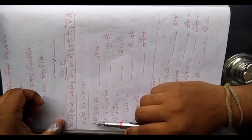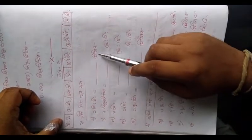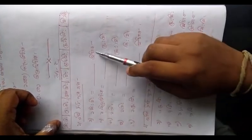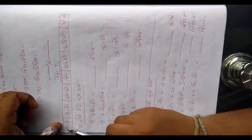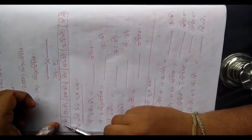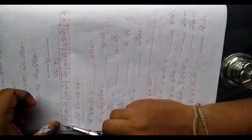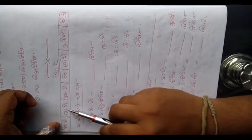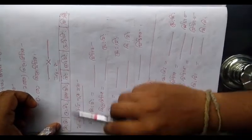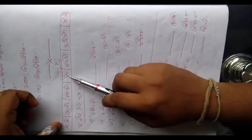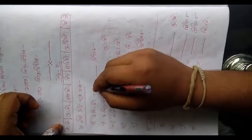1 kilometer equals how many meters? 1 kilometer is how many meters? Let me tell you: 1 meter. 1 meter is more than 3 meters. This means 1 meter is 1, 2, 3. Kilometer is more than 1 meter — 1 kilometer is more than 1 meter.